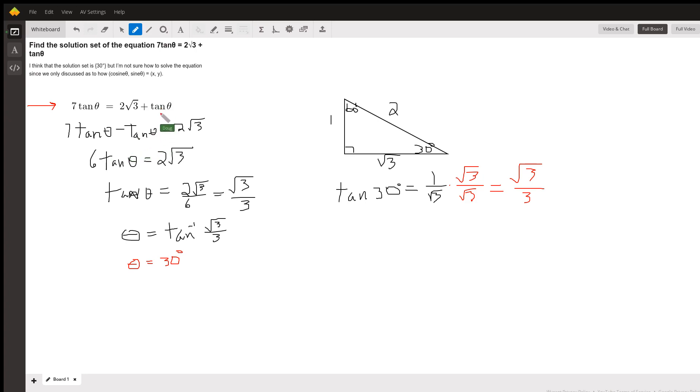by, in this case, subtracting the tangent of theta from both sides, seven tangent thetas minus one tangent theta is six tangent theta. And now if we divide both sides by six,